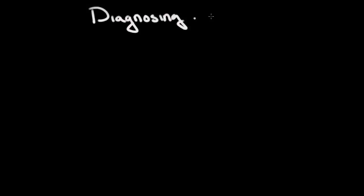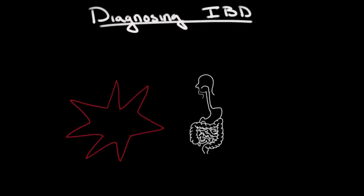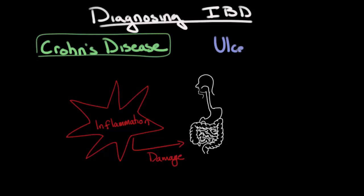Let's talk about how to diagnose inflammatory bowel disease, or IBD for short. Inflammatory bowel disease is a group of disorders caused by an inappropriate inflammatory response that results in chronic intestinal damage. There are two types of inflammatory bowel disease: Crohn's disease and ulcerative colitis.